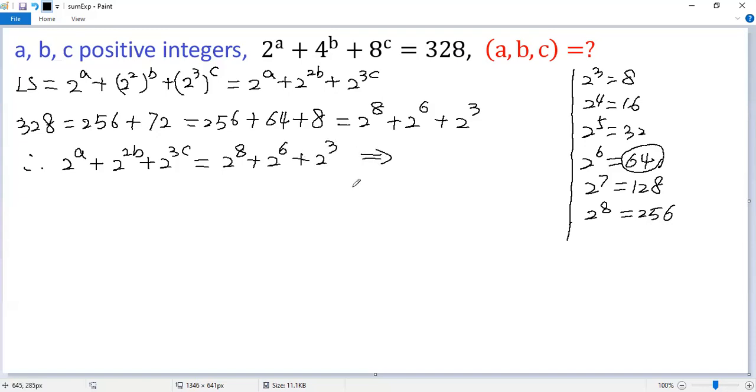So we have three possibilities. The first one: if a equals 8, then 2b can only be 6. It cannot be 3 because b is an integer. So 2b equals 6, 3c equals 3. So the first solution would be a equals 8, b equals 3, c equals 1.